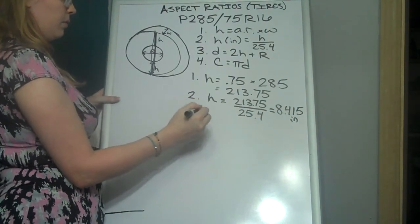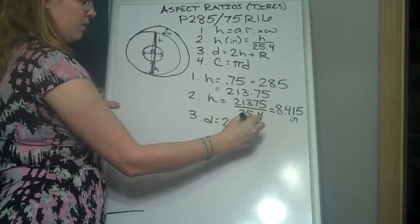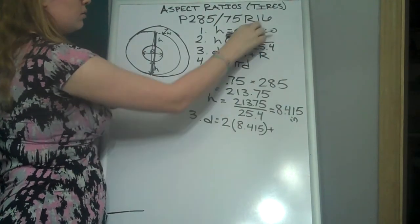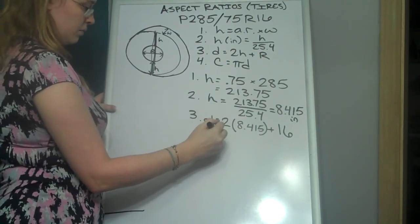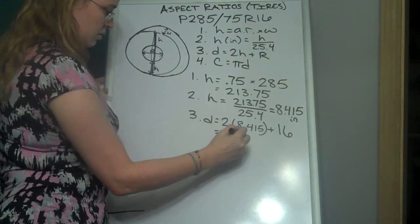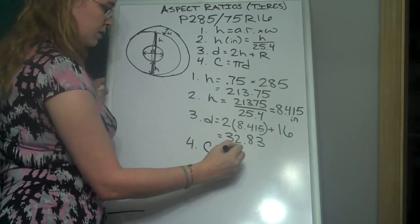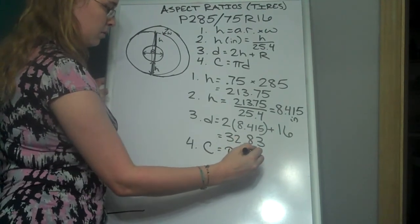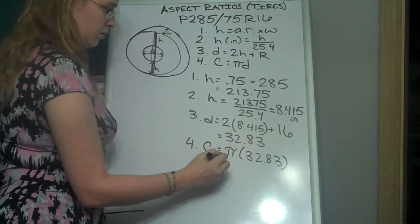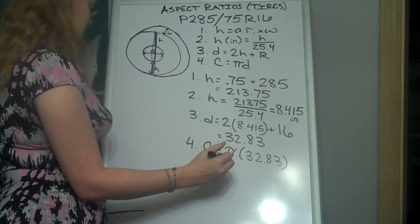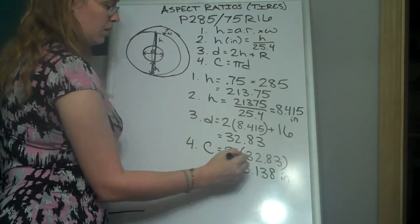Diameter is 2 times height plus rim. So, 2 times 8.415 plus my rim is 16 up here. And that comes out to be 32.83. And, last but not least, circumference is pi times diameter. So, that's pi times my answer from the last part, 32.83. And it gets me approximately 103.138 for my circumference. So, there's my second example.